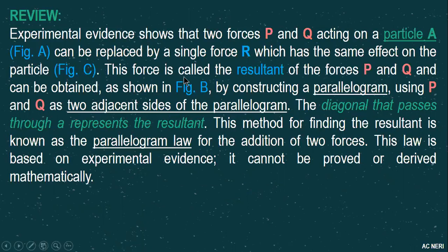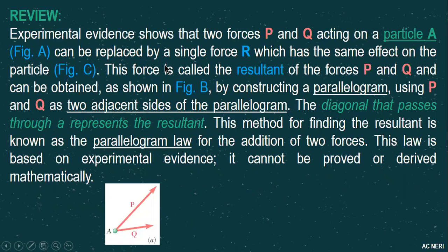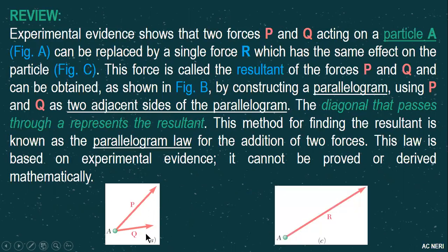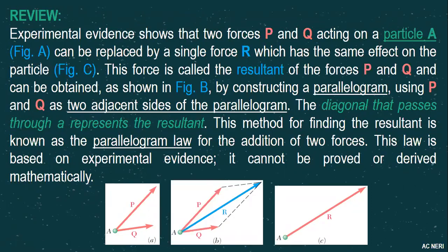Experimental evidence shows that two forces P and Q acting on a particle A can be replaced by a single force R which has the same effect on the particle. This force is called the resultant of forces P and Q and can be obtained by constructing a parallelogram using P and Q as two adjacent sides. The diagonal of the parallelogram is the resultant.